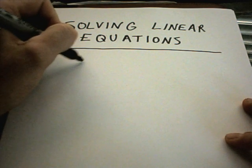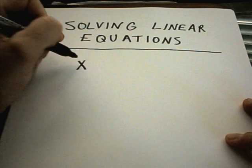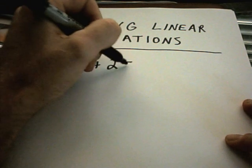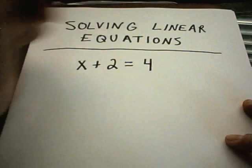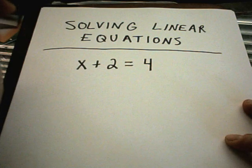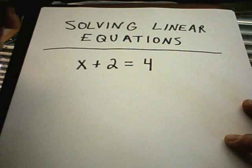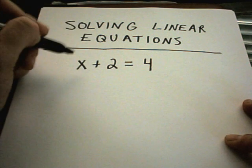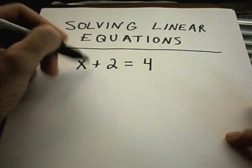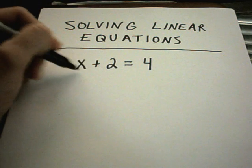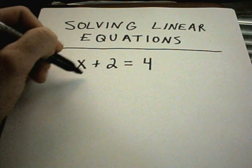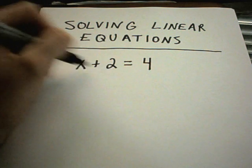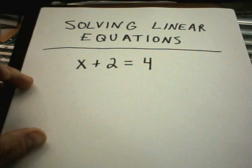A linear equation is basically where you have a variable, and almost always you'll just see x to the first power. There's going to be an equal sign, hence the equation, in there somewhere, and just numbers floating around as well. So what we're trying to do is figure out what value, if any, we can substitute in for x, so that on the left side when we do the arithmetic, we'll get the exact same thing as on the right side.